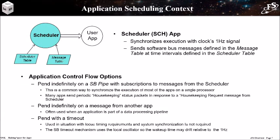The scheduler app provides a means to coordinate and schedule applications, allowing developers to create a synchronized flight software system. A synchronized system helps with load balancing, ensuring hard timing deadlines are met, test repeatability, and system diagnostics. The scheduler app is not to be confused with the underlying operating system scheduler. However, the application task priorities and the scheduler app schedule must be designed to complement one another so the overall system goals will be met. This also identifies some software bus control flow options that can be used to help achieve your system goals.